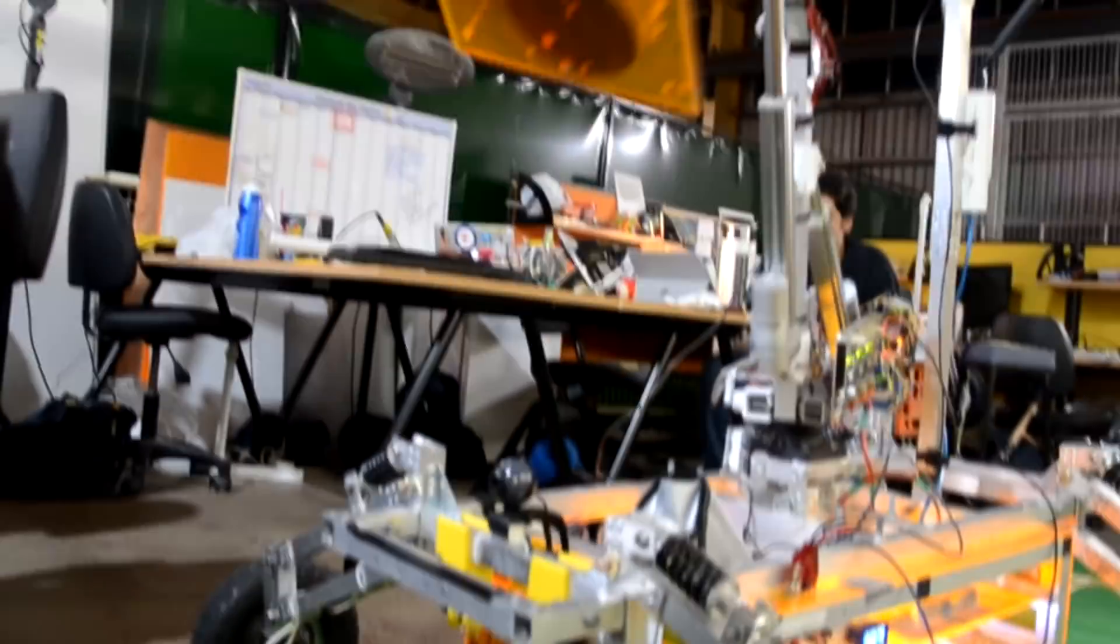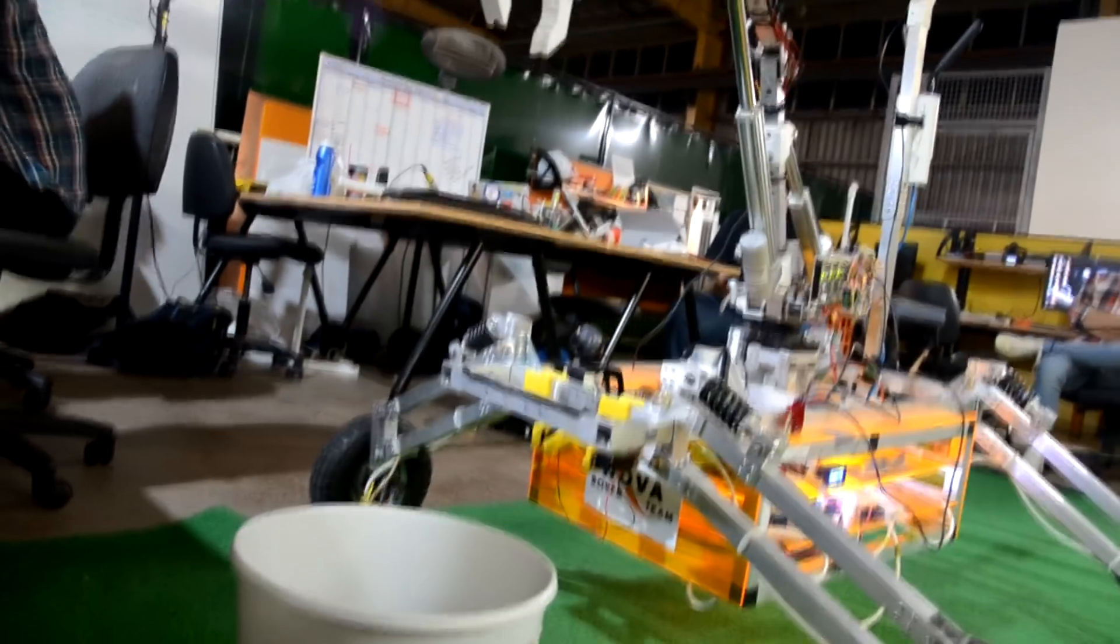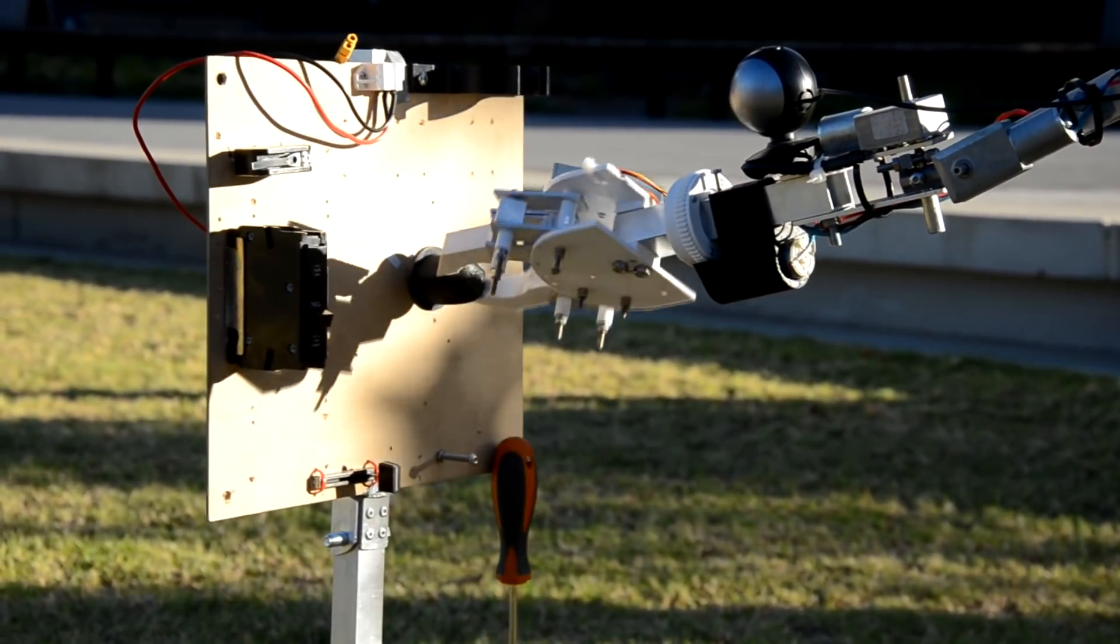Worm screw gear motors are used to provide precise positioning, and a continuous rotation joint allows the claw end effector to rotate infinitely.